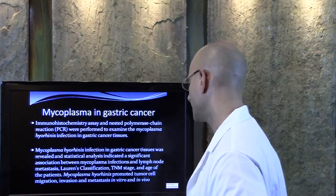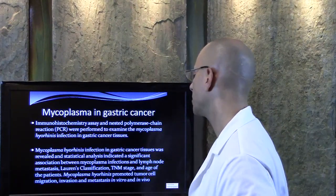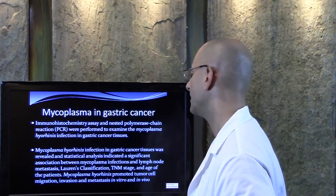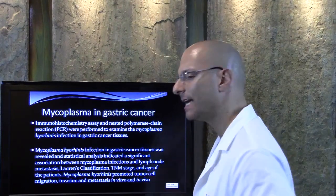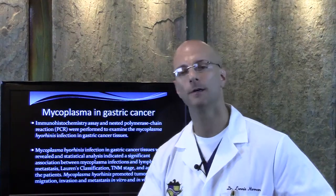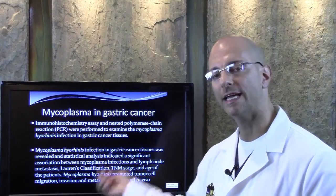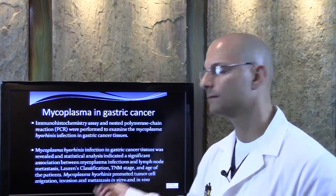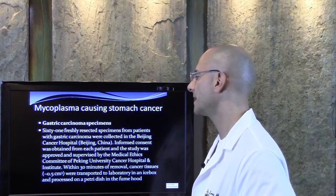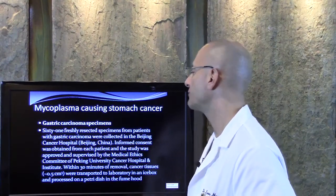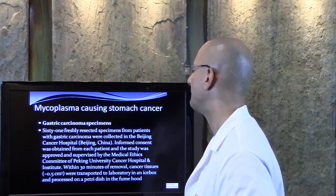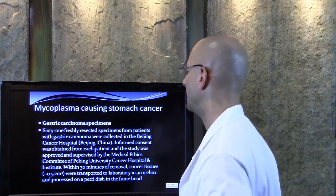Mycoplasma hyerhinis promoted tumor cell migration, invasion, and metastasis in vitro and in vivo. So it creates cancer, it makes the cancer metastasize, it causes lymph node metastasis. This bacteria caused the cancer. Gastric carcinoma specimens — 61 freshly resected specimens from patients with gastric carcinoma were collected in the Beijing Cancer Hospital in Beijing, China.